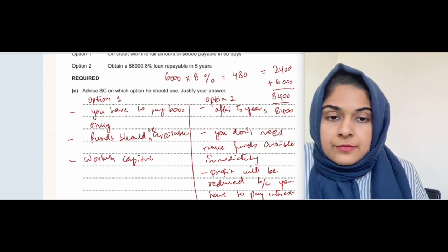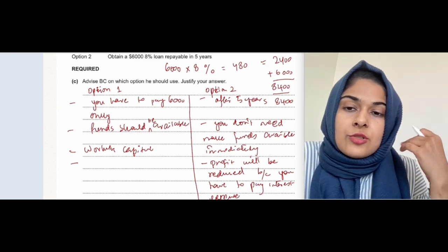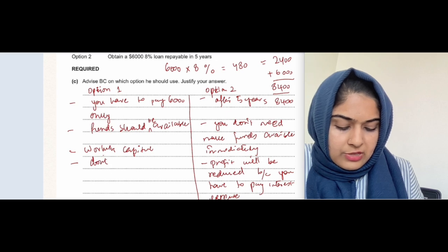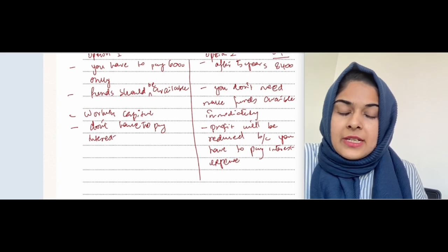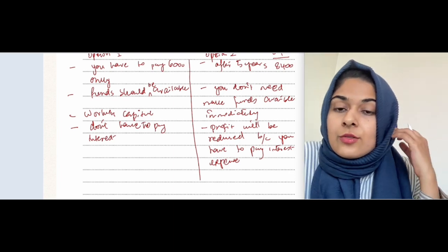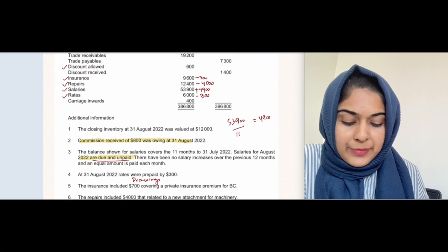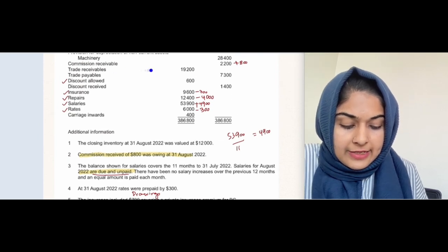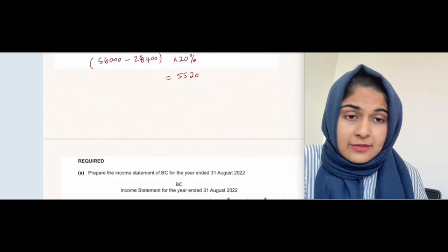In option one, the advantage is you don't have to pay interest. In option two, the advantage is you don't need to make funds available immediately. The long-term disadvantage of option two is you end up paying 8,400. My recommendation is option one, because trade receivables are 19,200 — so you don't need to worry about paying 6,000 for the machinery. That's it for this question.